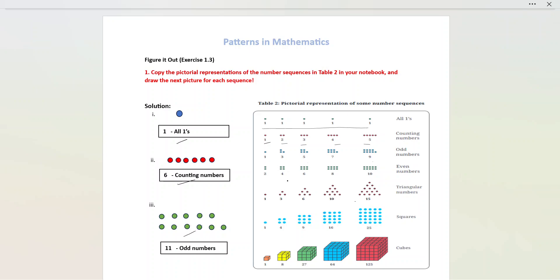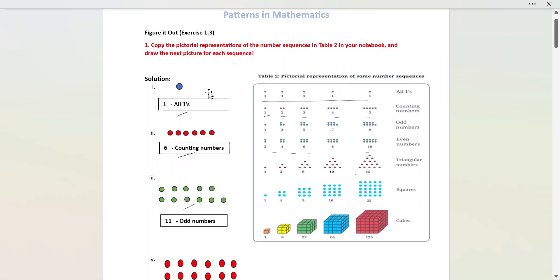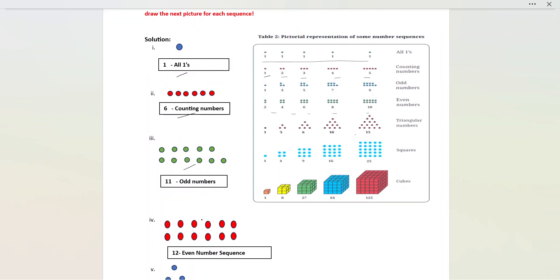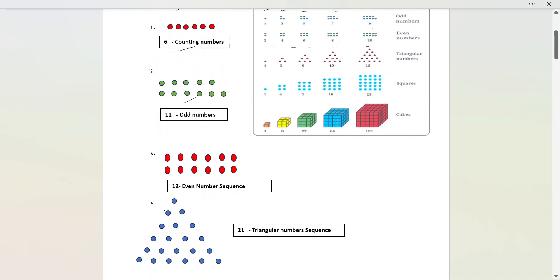Next, even numbers: 2, 4, 6, 8, 10. The next number will be 12. We can represent 12 as 6 beads on top and 6 again, so 6 plus 6 equals 12. Similarly, the next triangular number — after 15, adding 6 gives 21. So the next number is 21, and we can represent this as a triangular pattern.